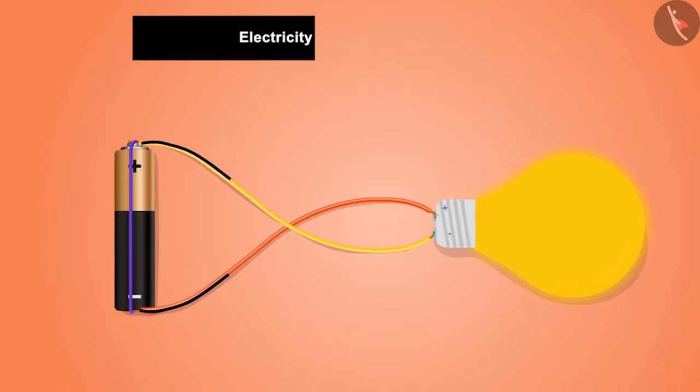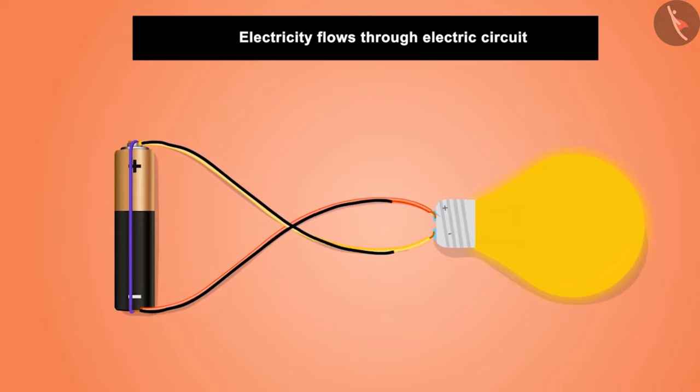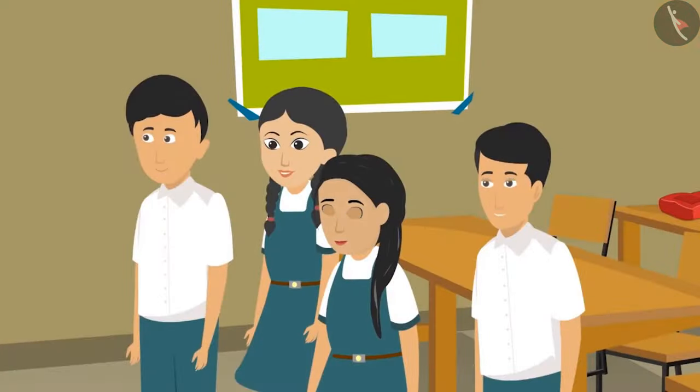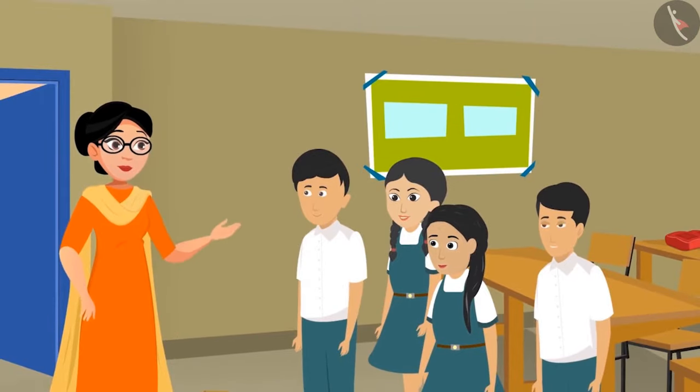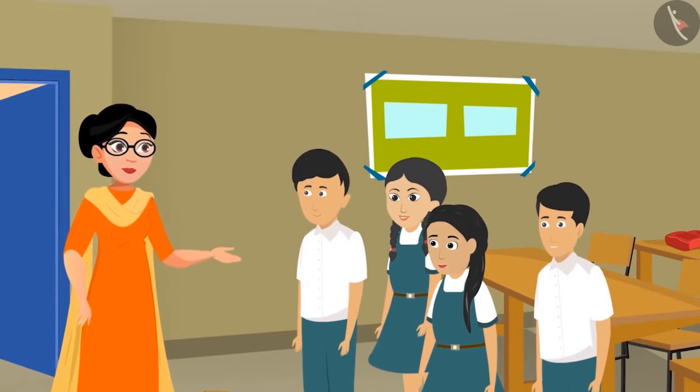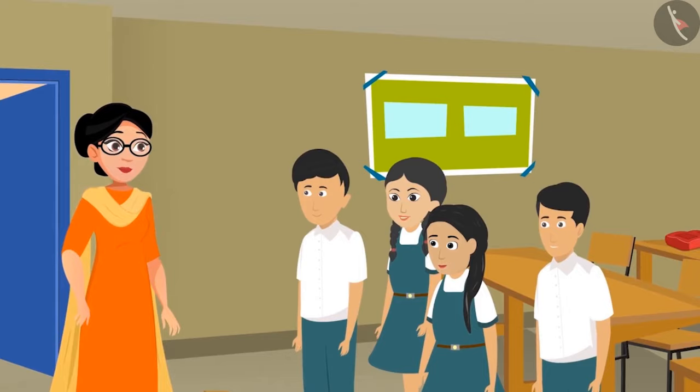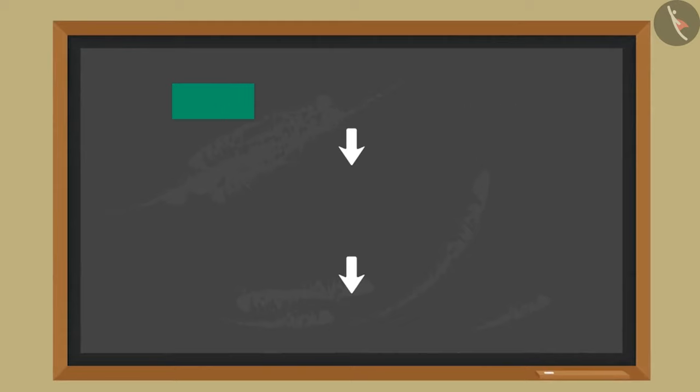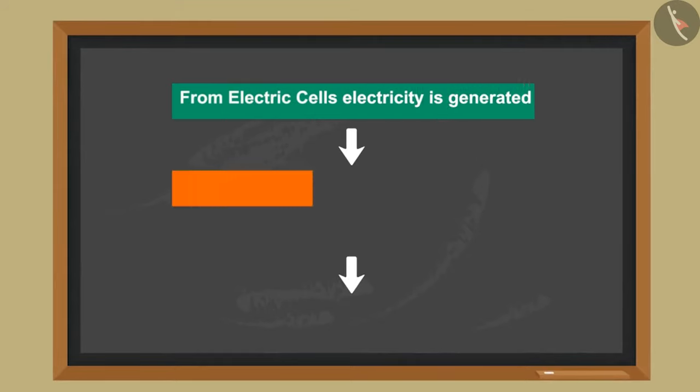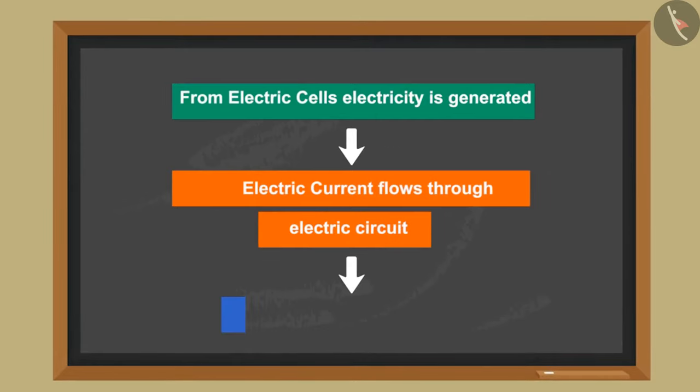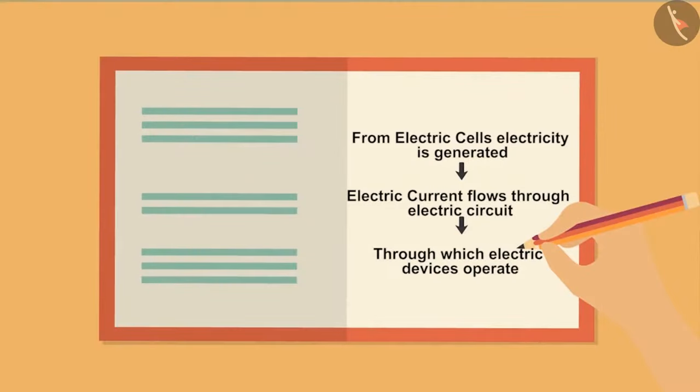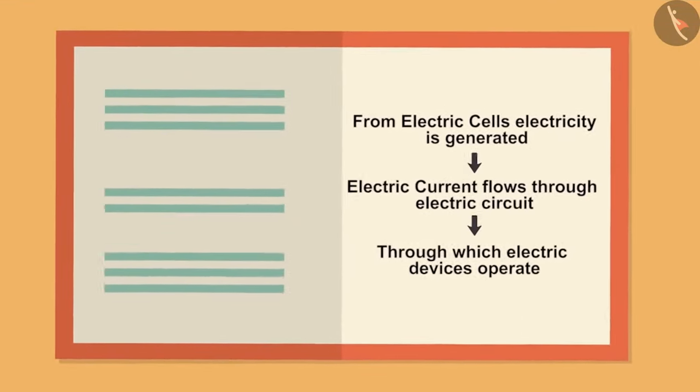'Okay, now let's make a flow chart of what we learned today, kids.' Seema Didi creates a flow chart on the board: from electric cells, electricity is generated as electric current, which flows through electric circuit, through which electric devices operate. All the children make this diagram in their copies.